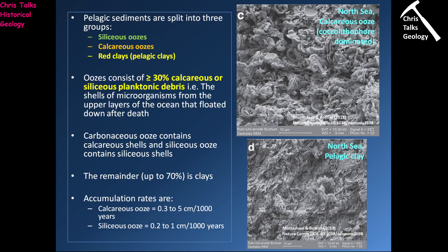The remainder of the sediment — up to 70% — is going to be clay, or clay-sized clasts. The accumulation rate for these siliceous and calcareous oozes is extremely low. A calcareous ooze will typically have an accumulation rate of between 0.3 and 5 centimetres per thousand years, and a siliceous ooze will have an accumulation rate of between 0.2 and 1 centimetre per thousand years — very, very slow rates of accumulation.